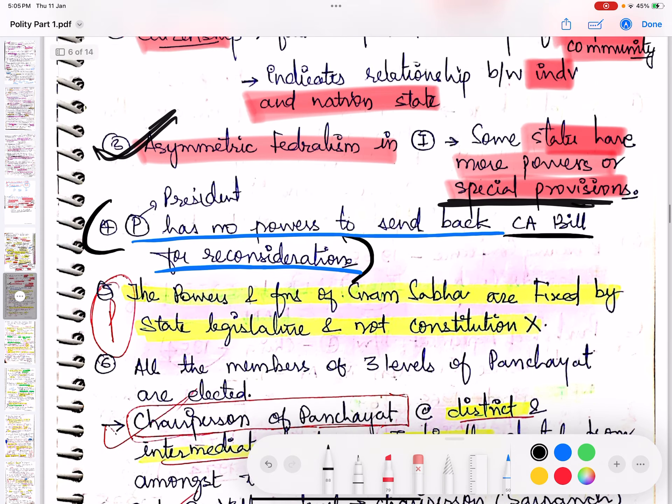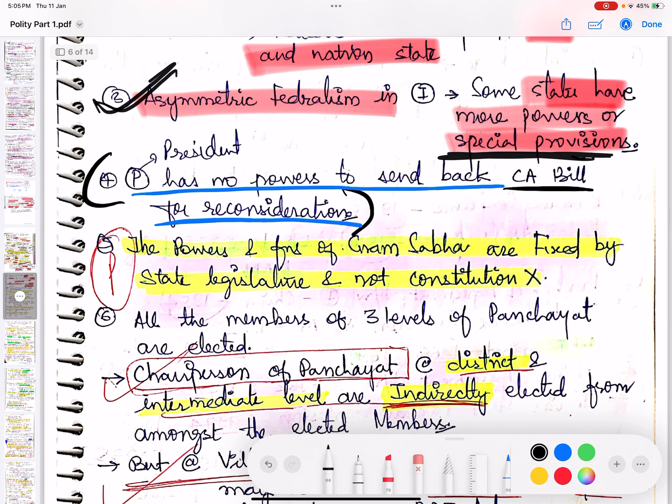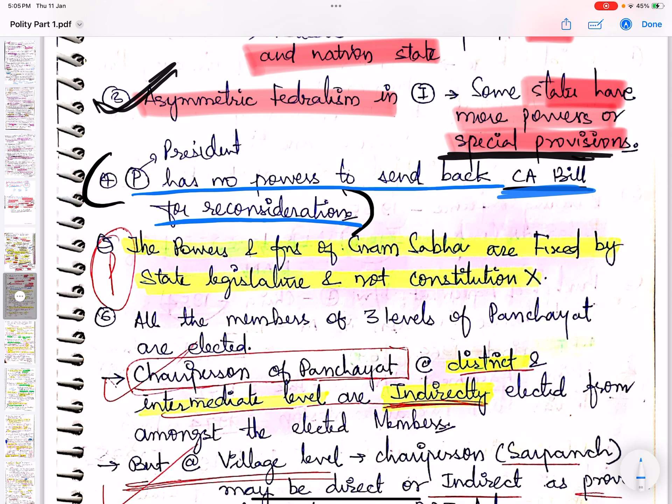President has no power to send back a Constitution Amendment Bill. The President cannot send it back for reconsideration - he has to say yes. But can the President send back a Money Bill? Tell me in the comment section, let's see who is paying attention.